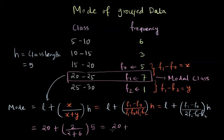And if we compute this, we get 20 plus the ratio becomes two by eight, which is nothing but one by four times five, which is nothing but 20 plus five by four, which is 20 plus 1.25 or 21.25 and 21.25 is the mode for this example.